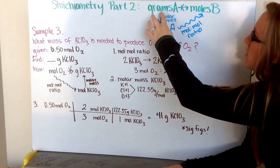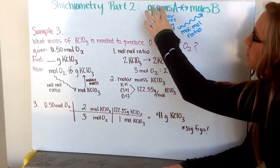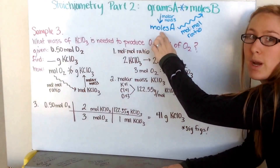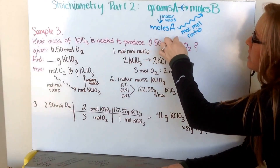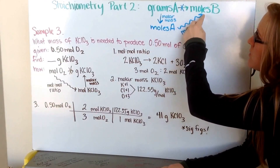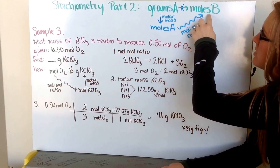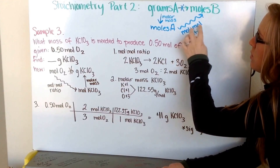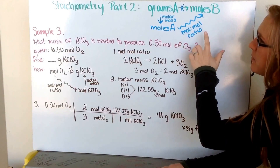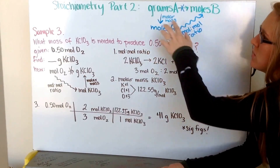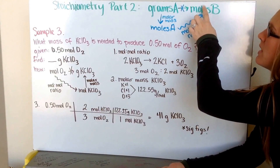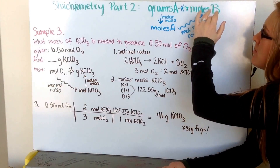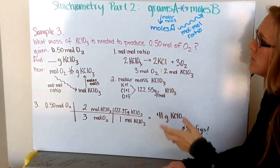We first have to go down via our molar mass from grams of A to moles of A, so that we're at our mole center. Then we're going to take our mole-to-mole causeway across our river to get to moles of B, using our mole-to-mole ratio of A to B. If we need to go the opposite direction — moles to grams — we just do it in reverse.